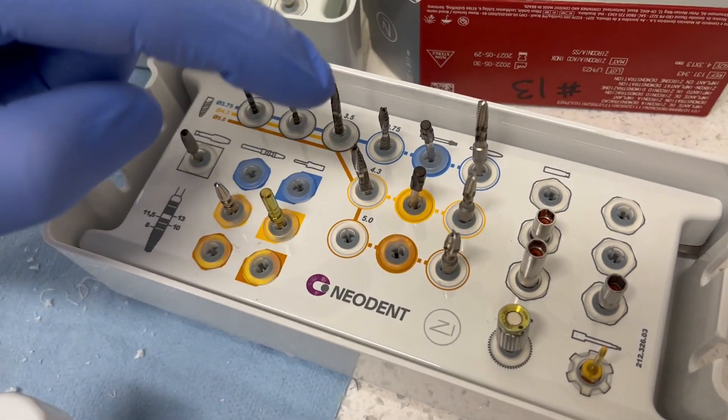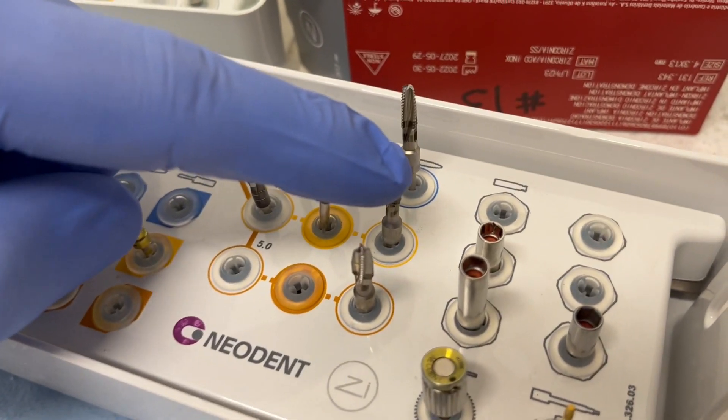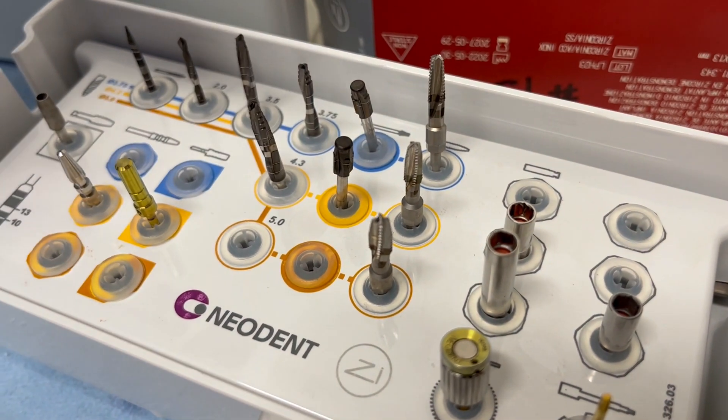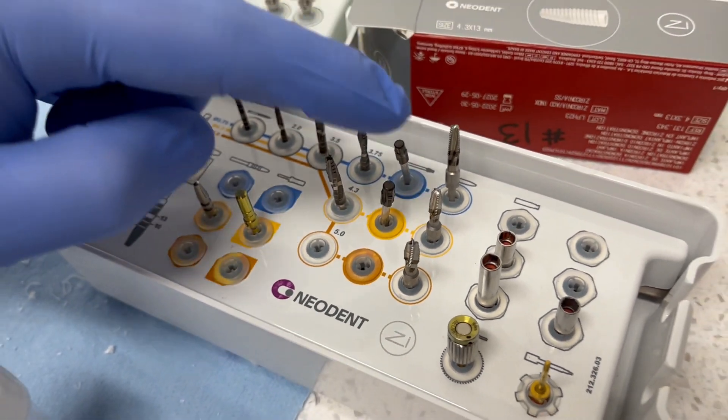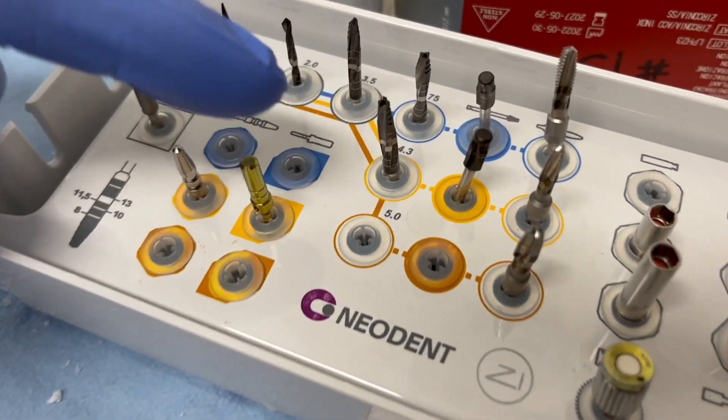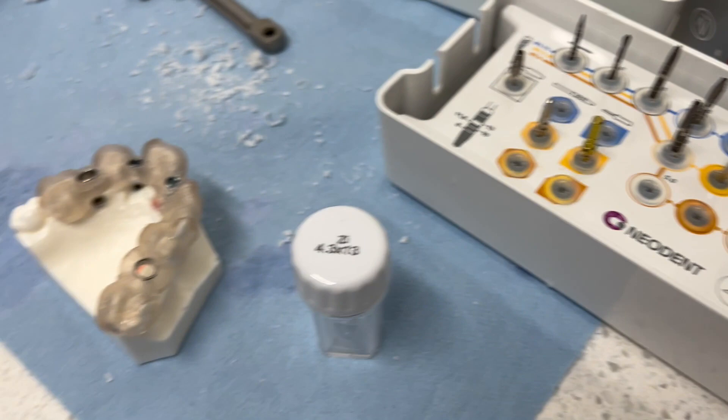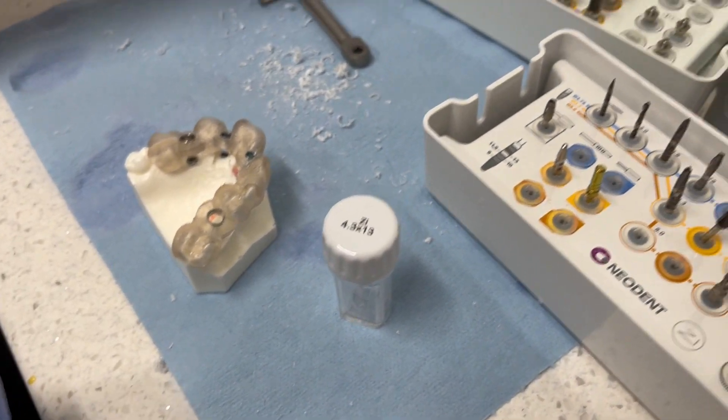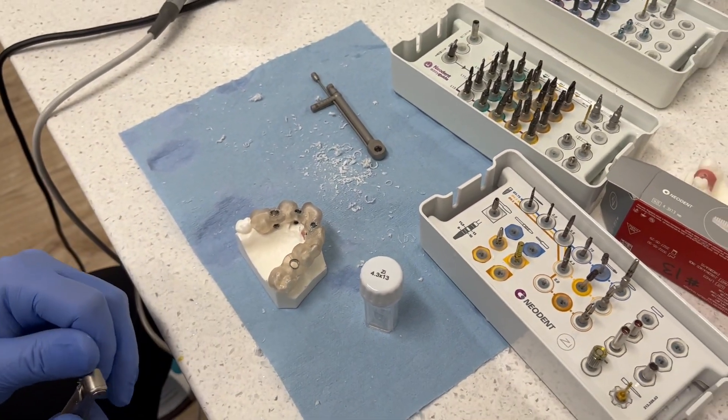In that case, we have to use this countersink tool and we have to tap the bone if we're in D1 or D2. If we're in D3, we have to do a countersink only. And if we're in D4, we just go to the corresponding drill size. So now there's no full digital workflow, but we're able to still utilize it to be able to get our implant in the ideal prosthetic position.